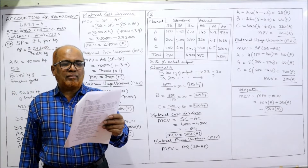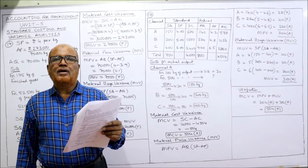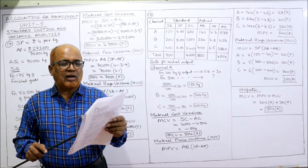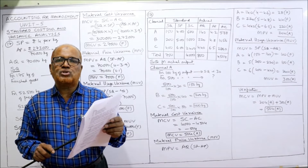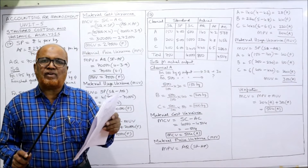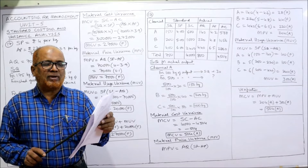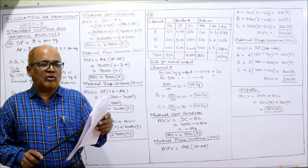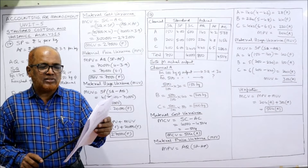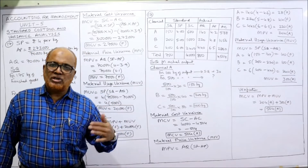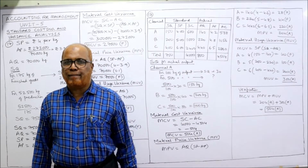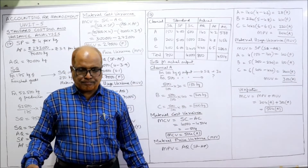In a batch, 500 kilogram of chemical X were produced. Actual quantities used: chemical A, 140 kilogram at a total cost of 588 rupees; chemical B, 220 kilogram at a cost of 1,056 rupees; chemical C, 440 kilogram at a cost of 2,860 rupees. We need to calculate material cost variance, material price variance, and material usage variance.